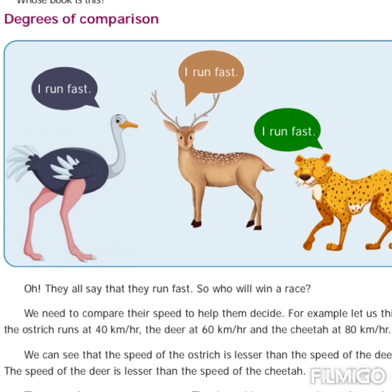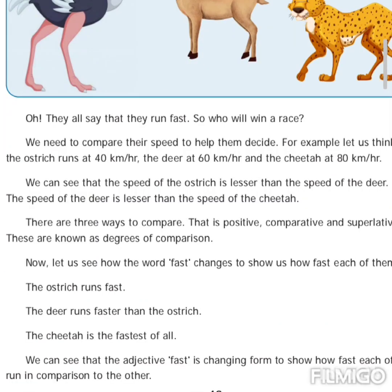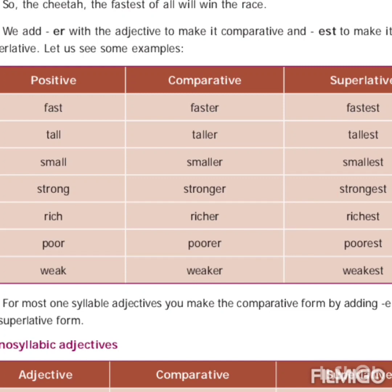The word 'fast' changes to show how fast each animal runs. First: the ostrich runs fast — here we are talking about only one thing, so this is positive degree. The deer runs faster than the ostrich — here we compare two things, so this is comparative degree. The cheetah is the fastest of all — here cheetah is compared with all others (more than two), so this is superlative degree. The word 'fast' changes to 'faster' and 'fastest'.